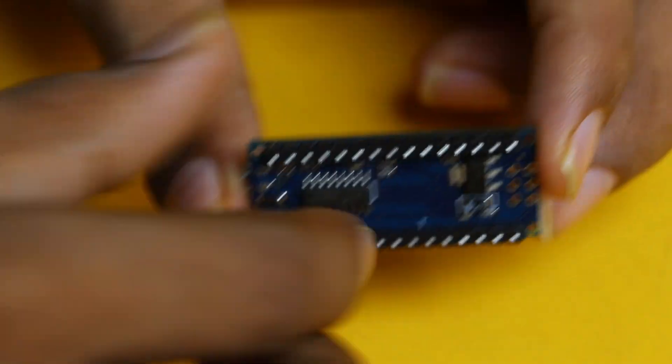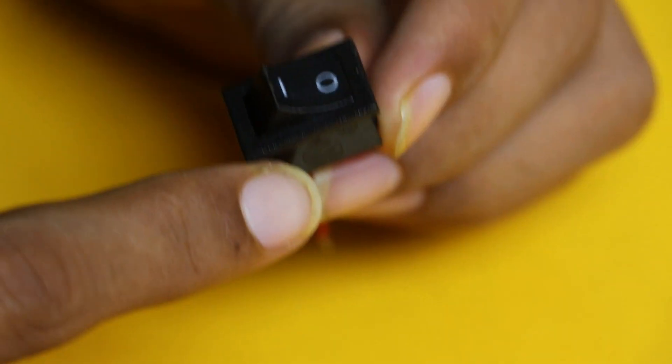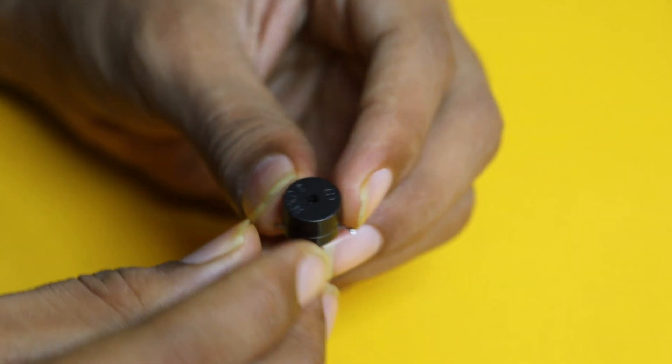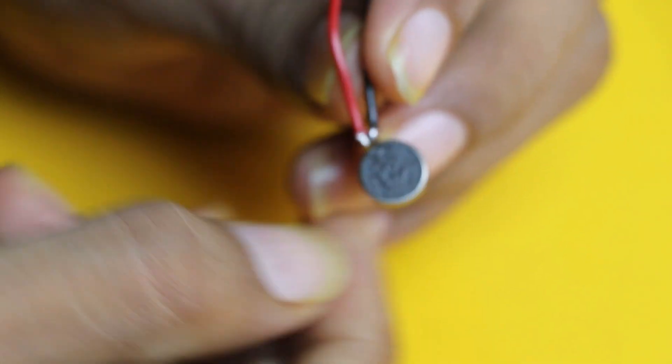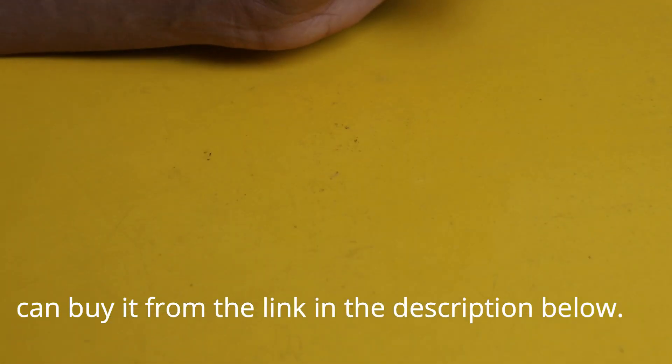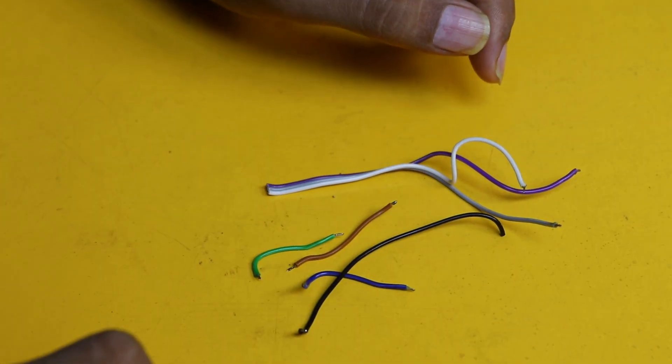This is the Arduino Nano we are going to use. We will program this Arduino Nano so that it can sense the data of the eye blink sensor. This is the SPST single pole single throw switch and this is the 9 volt battery which is going to provide power supply to our circuit. This is the battery cap - we have extended the wire a little bit. This is the buzzer which is going to create sound alert for the user. This is a vibration motor, actually a mobile phone vibration motor. You can use any type of vibration motor. These are some of the ribbon wires we are going to use in our project.